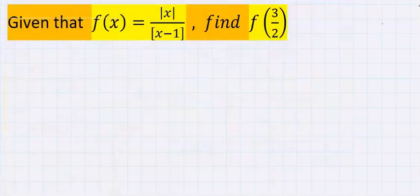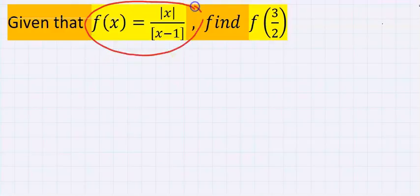Let's consider this question: given that f of x equals |x| over [x-1], find f of 3 over 2.